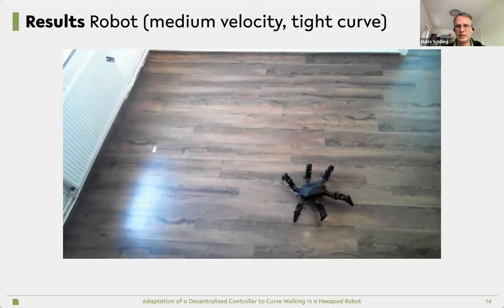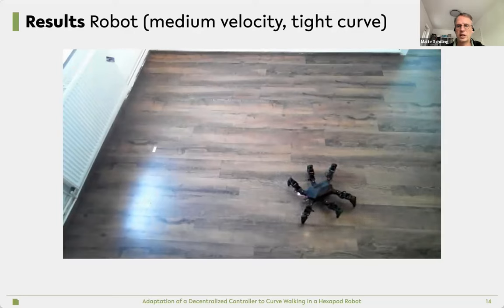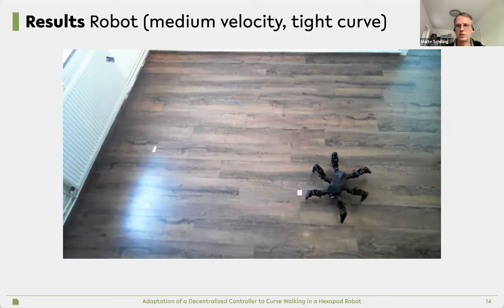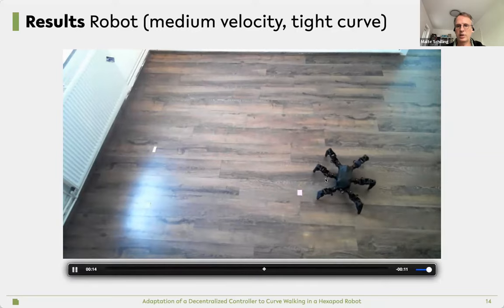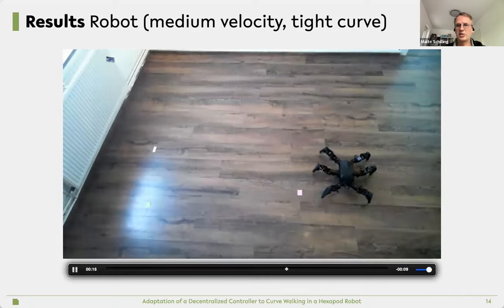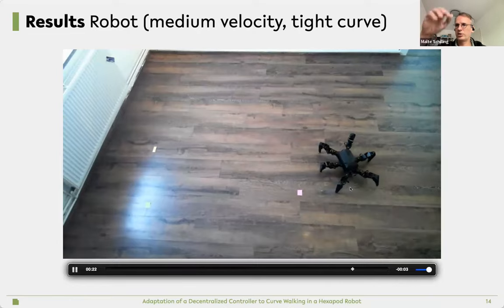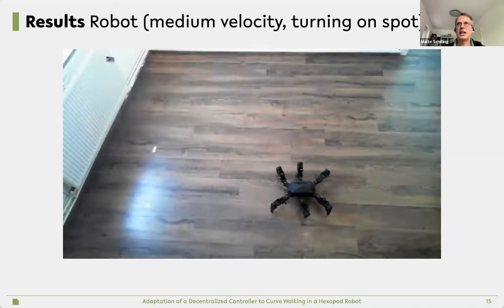Now the same thing on the robot. He's walking to the right. You will see that he's producing a curve walking movement. But similar to an insect, the middle inner leg is something like an anchor for the movement. So it's not really making movements to the front, but mostly turning around things.